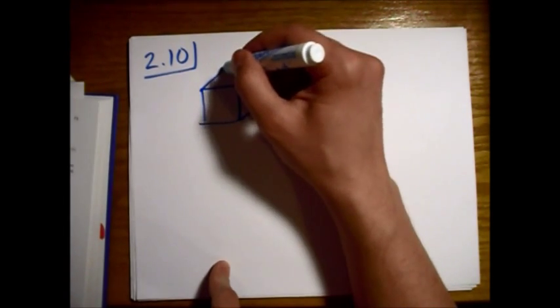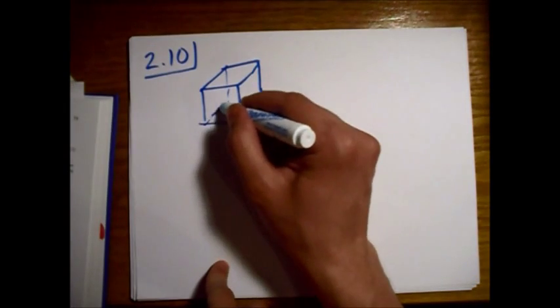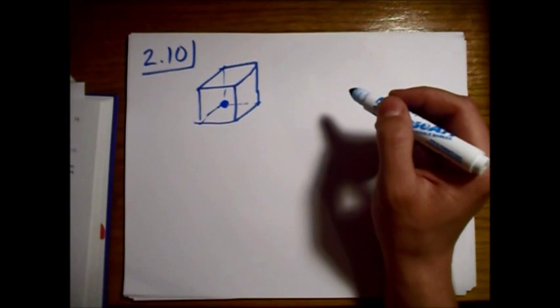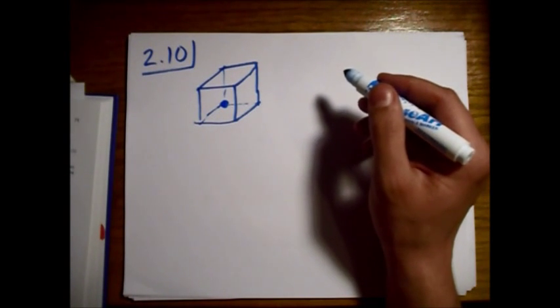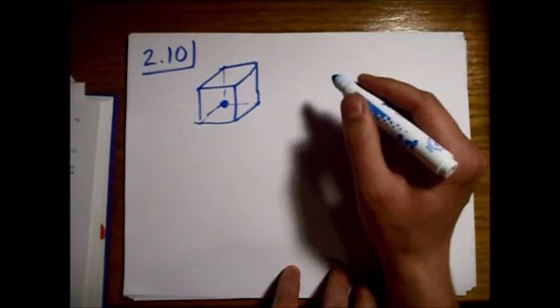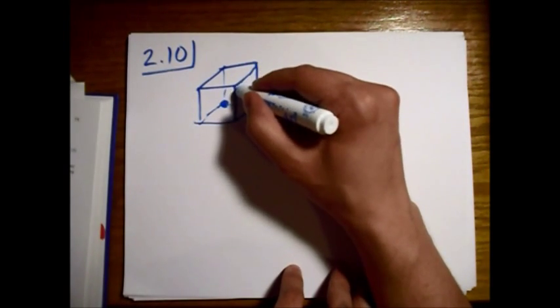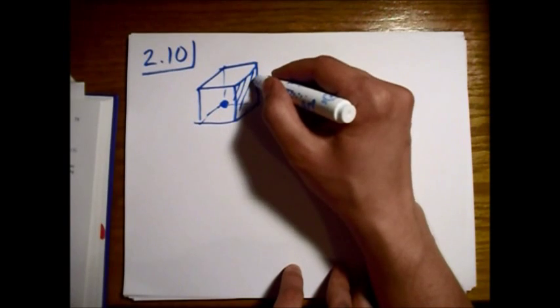Alright, so the charge is right here in the back corner. What is the flux of E through the shaded side, which is this side right here.